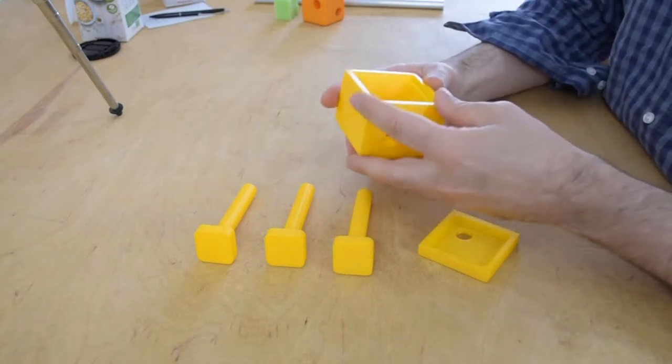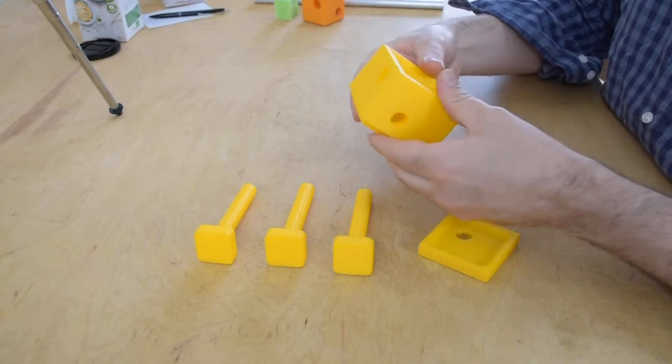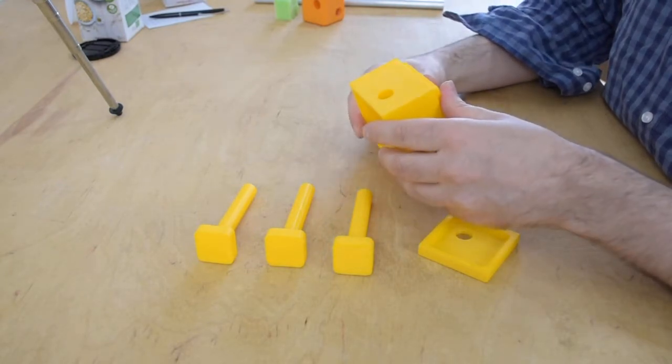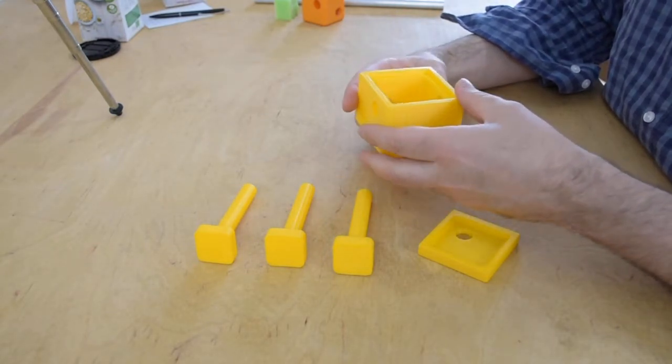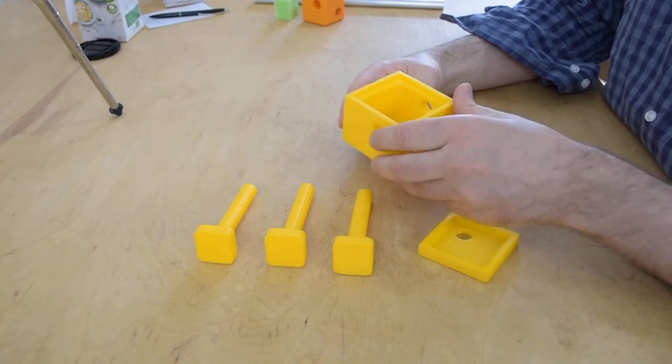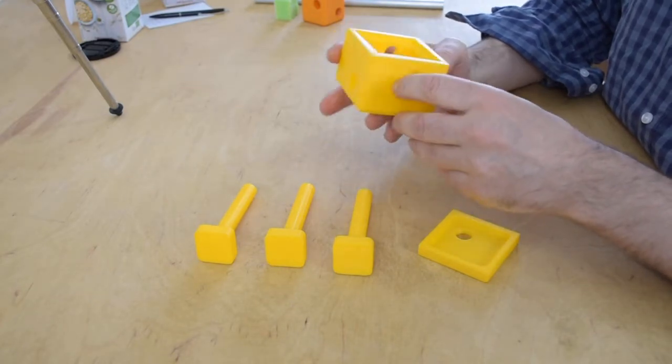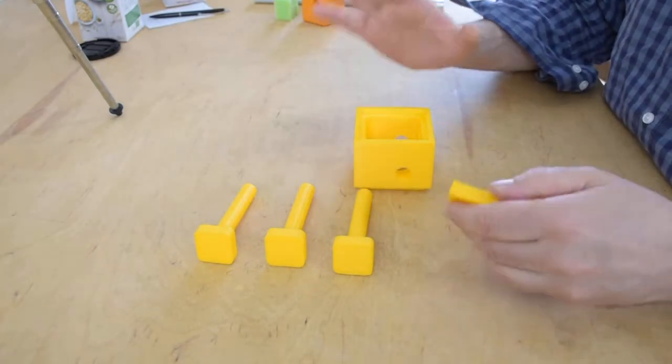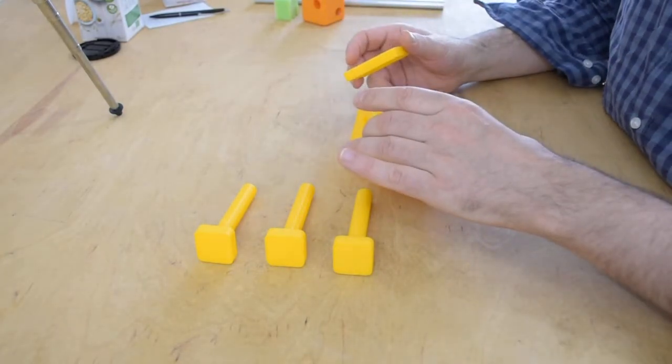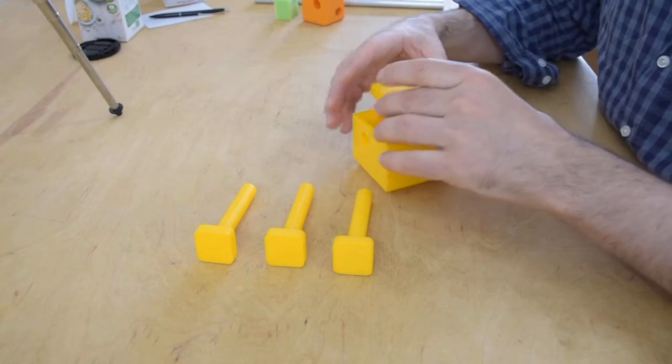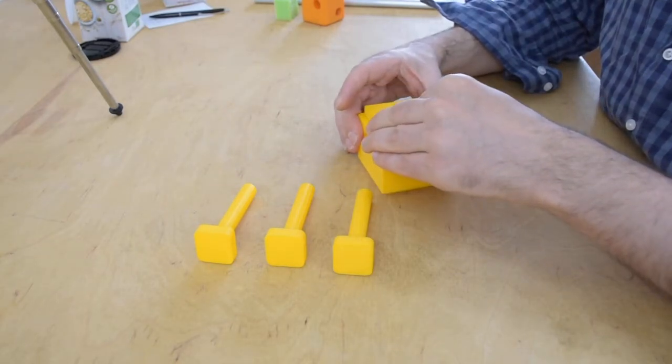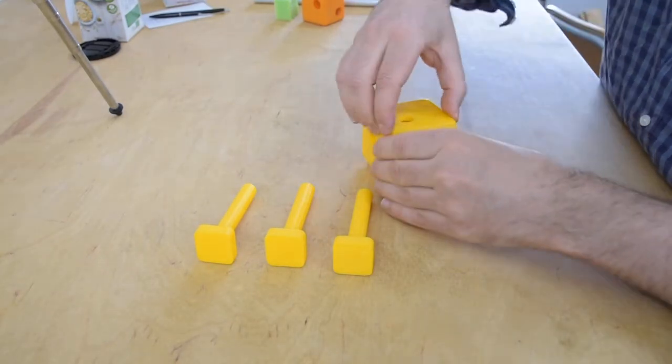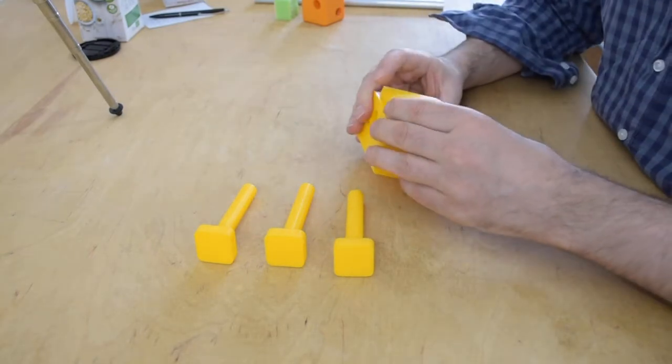And this mold is designed with FreeCad, an open source CAD program which I really like and love. And you can of course download the files for this mold and you can 3D print it. But I choose to 3D print it because then I have a really precise mold here where everything fits tight and the silicone probably won't get out.